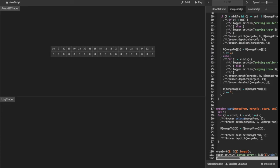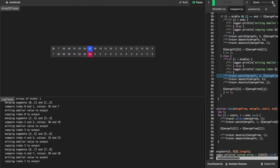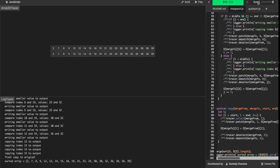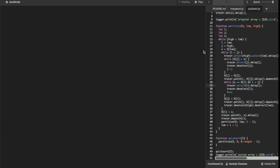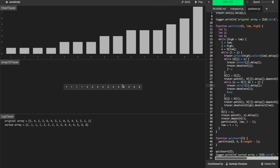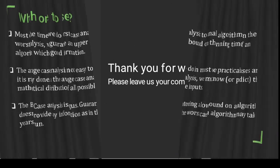Some algorithms like merge sort always remain constant with n log n complexity whether it's best case, worst case or average case analysis, while some like quick sort have worst case analysis when the array is already sorted and best case analysis when the array is divided in between. That's all for this presentation, thanks for watching.